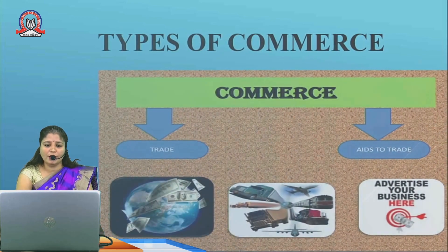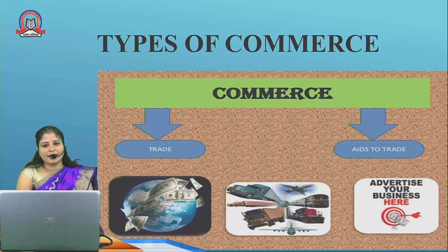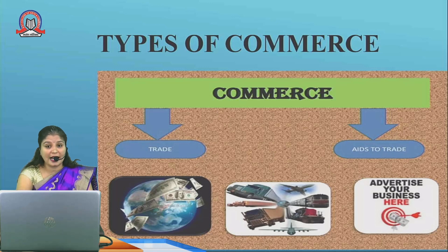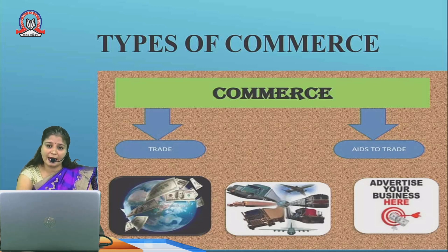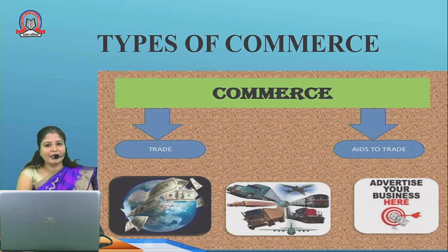Now, the types of commerce. When you are studying BCom, you should know what commerce includes. Commerce is a wider concept. It consists of trade and aid to trade. Trade is the buying and selling of goods and services, whereas aid to trade refers to those helpers — it is nothing but an auxiliary to trade, without which trading activities cannot be possible. Without aid to trade, the economy cannot run.